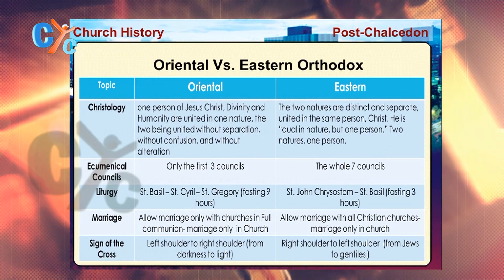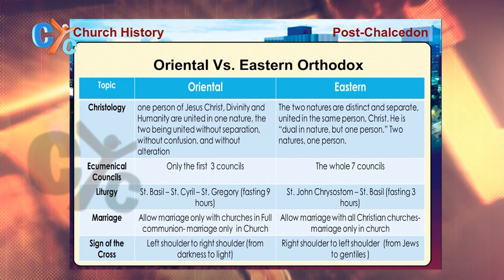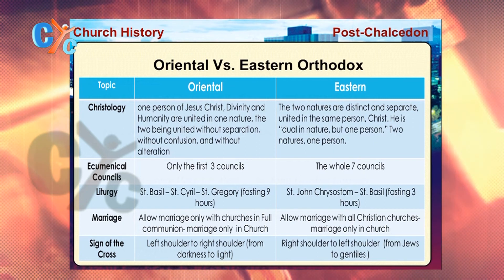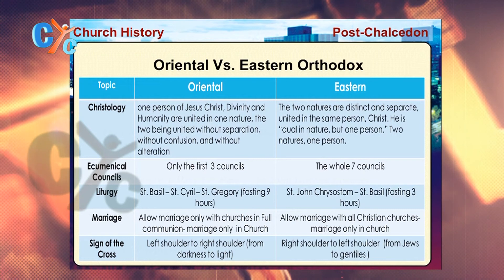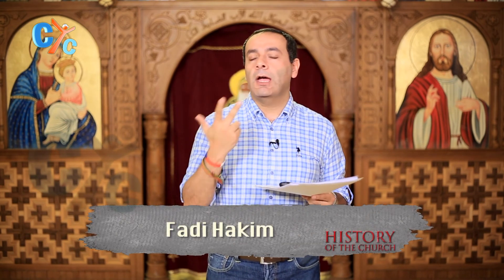Concerning marriage, it is a sacrament in our church and happens only between believers from the same denomination inside the church. The Eastern Orthodox accept marriages between different denominations, but it is also a sacrament and must happen inside the church. Regarding the sign of the cross, we draw it saying: 'In the name of the Father, the Son, the Holy Spirit, one God, Amen' — moving from left to right — while they do it from right to left.